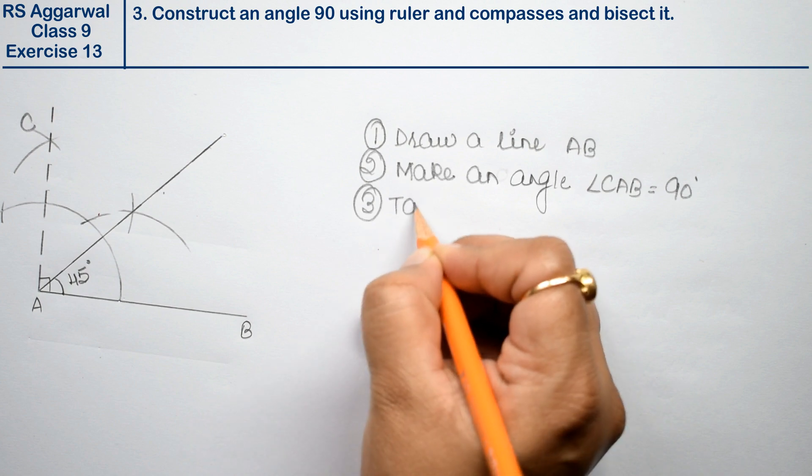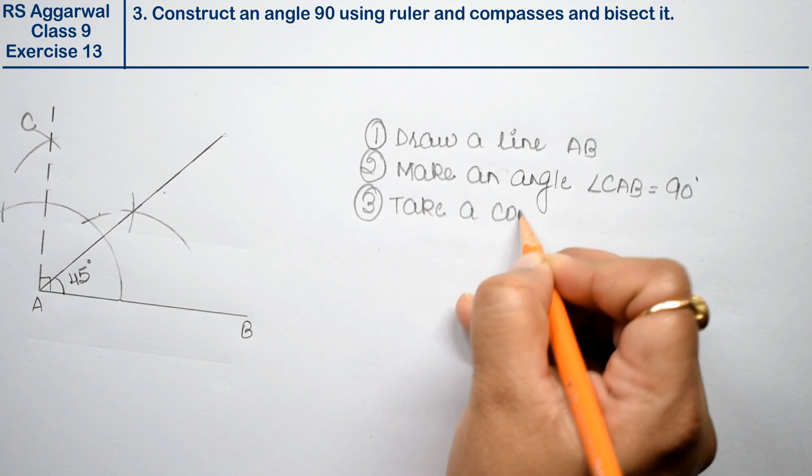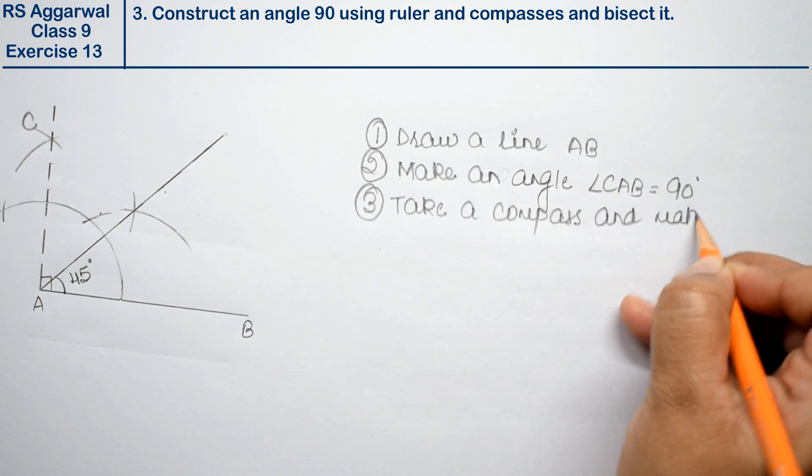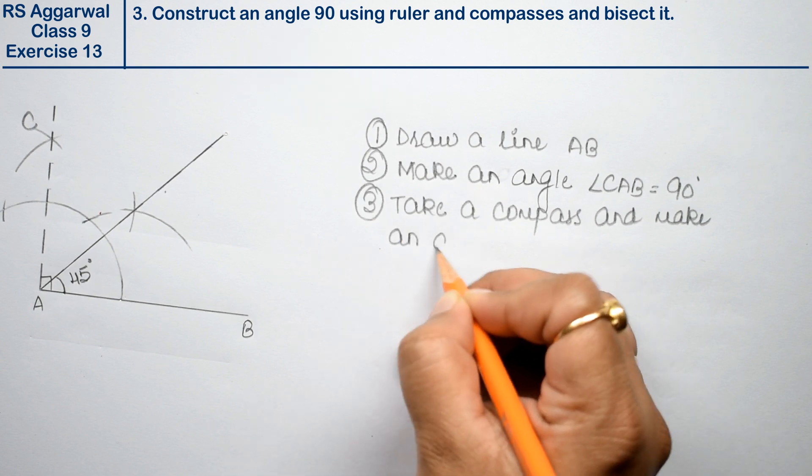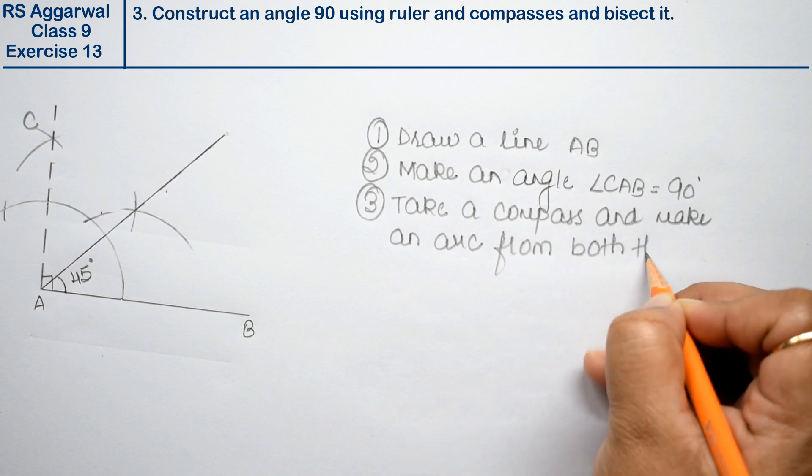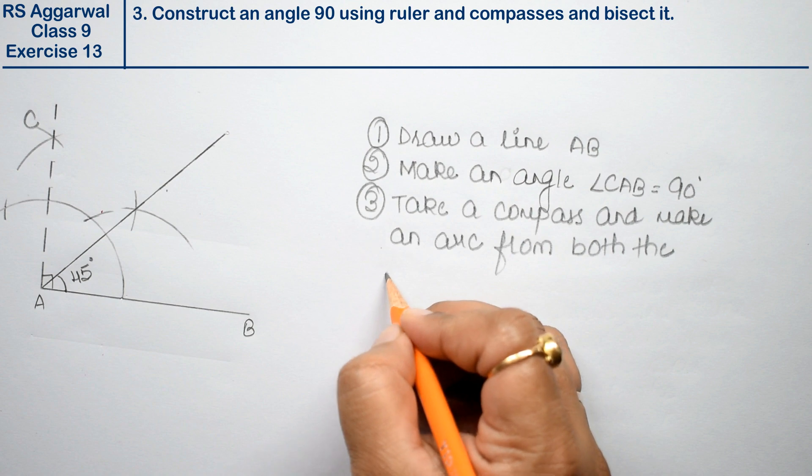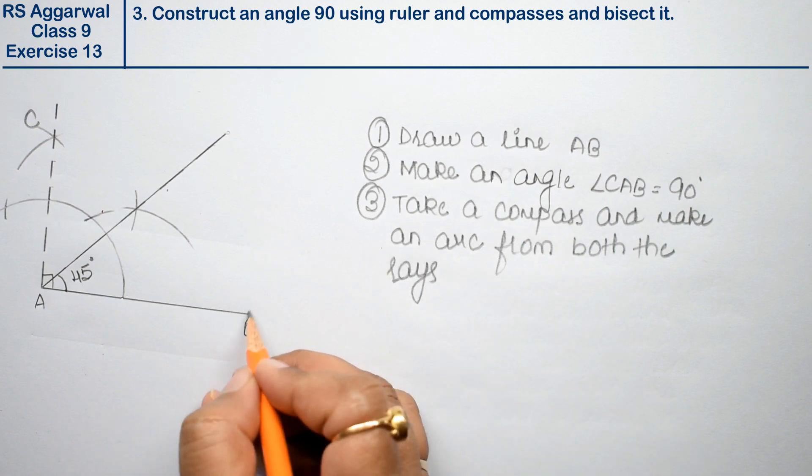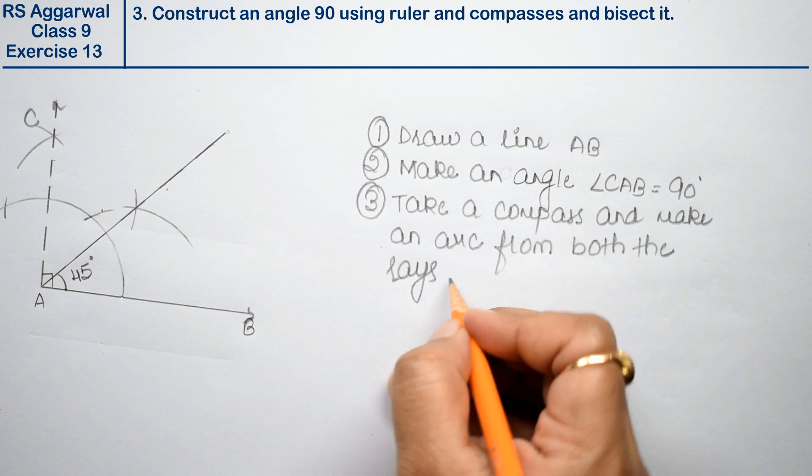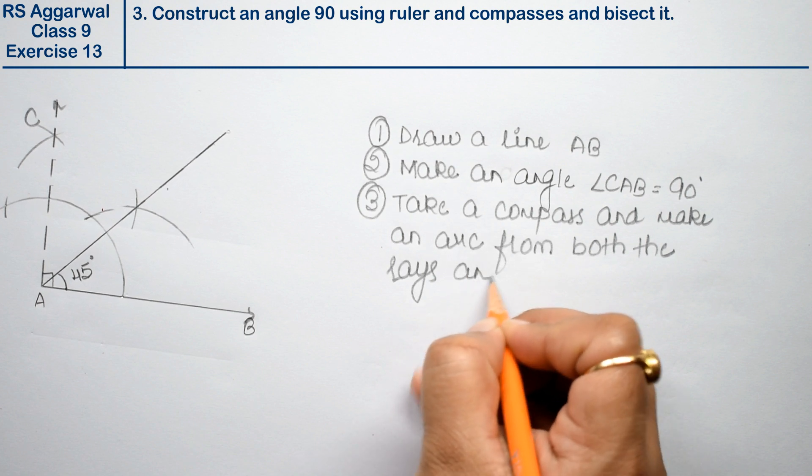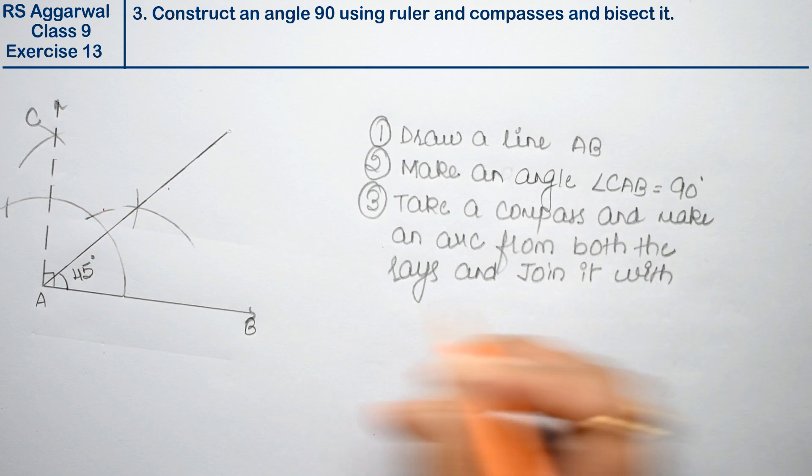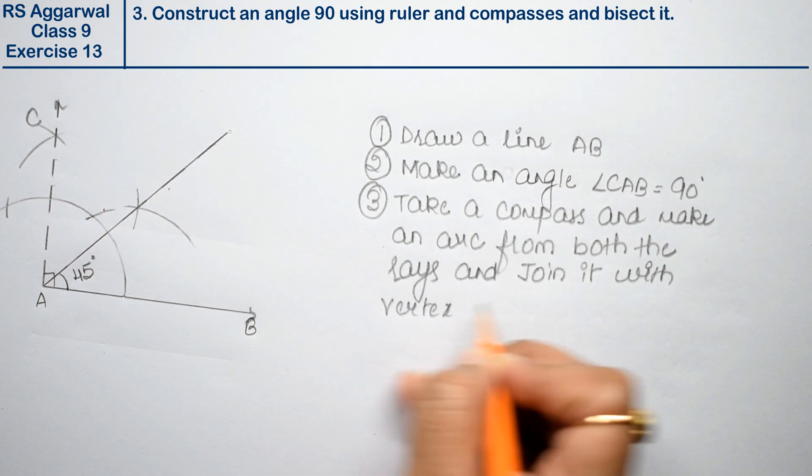Third, take a compass and make an arc from both the sides. Both the rays, axes, anything you can say. From both the axes and join it with vertex A.